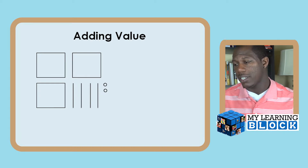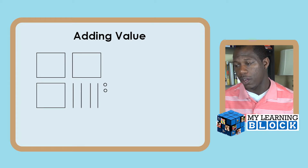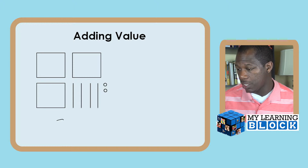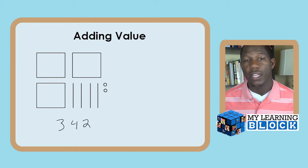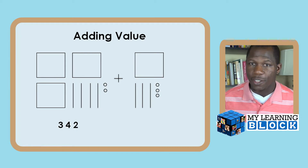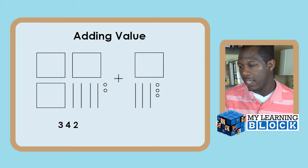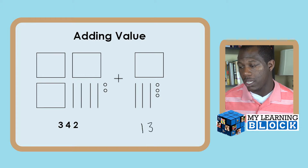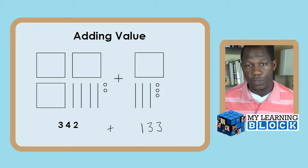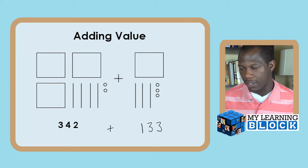If your child sees this, they should be able to determine that there are three flats, four rods, and two units, which gives them the number 342. They're then going to add one flat, three rods, and three units — which gives them 133. So they're adding 342 (three flats, four rods, two units) to 133 (one flat, three rods, three units).